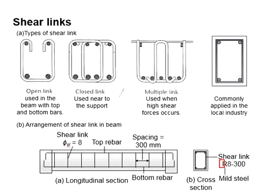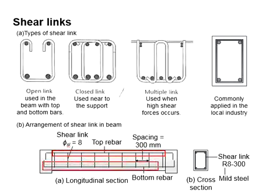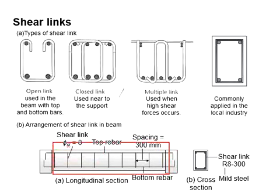Mild steels are used because they are easier to be bent on the construction site. The shear link is arranged at the specified spacing along the beam, starting from one support surface to another. It is tied with the top and bottom reinforcement bar, forming a steel cage before concrete is poured for casting.